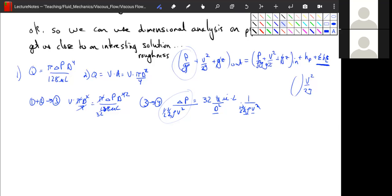So we're going to go from 4 to 5. Delta p over 1 half rho v squared is equal to, that 1 half comes up here, makes this a 64 times 1 over the Reynolds number. And what's left is an l over d.